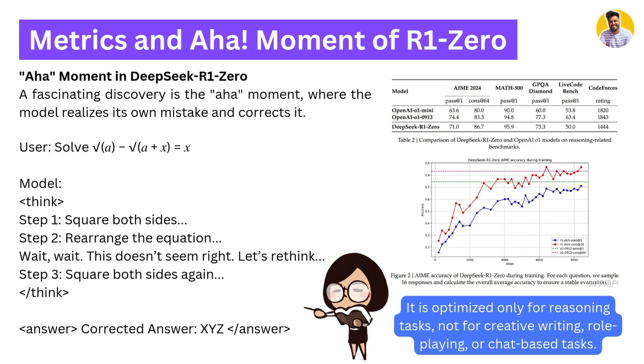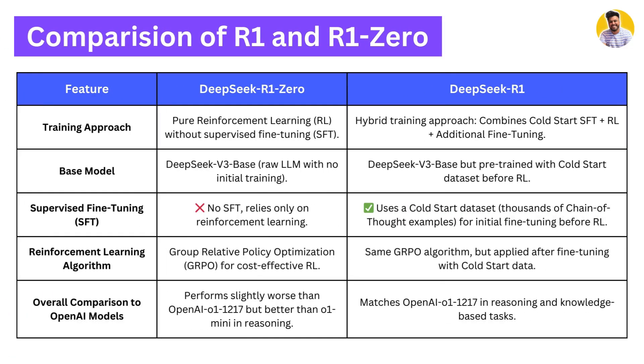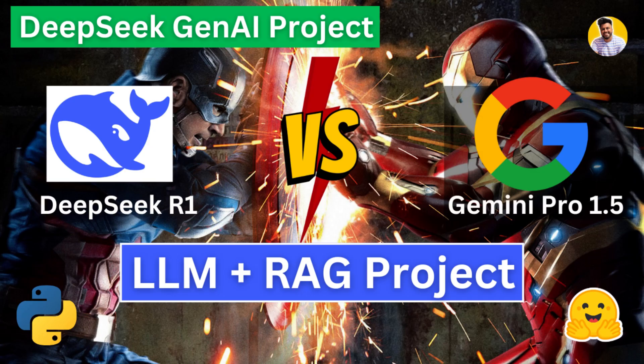R1-Zero is optimized only for reasoning tasks, not for creative writing, role-playing, or chat-based tasks. For performance, it works really well on reasoning tasks, coming close to GPT-4 and beating many open-source models with less cost and resources. In our next video we'll build a RAG-based project comparing DeepSeek R1 and Gemini Pro 1.5 on reasoning and RAG-based questions, so subscribe now.